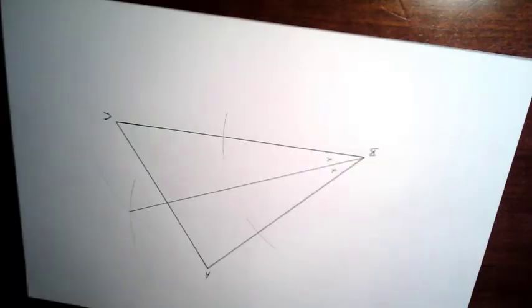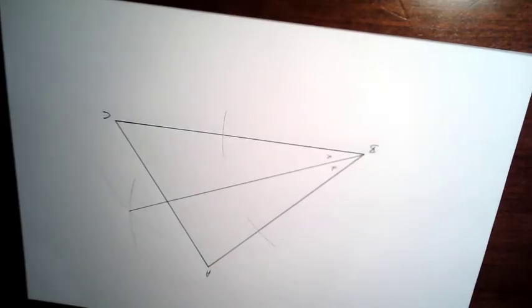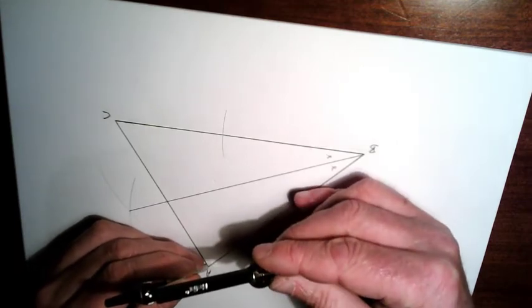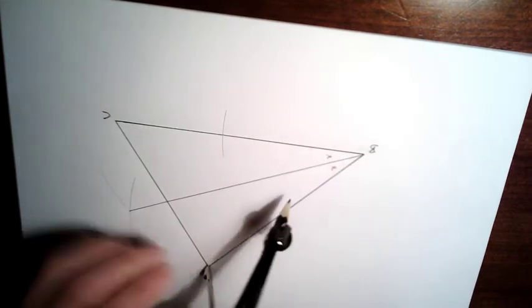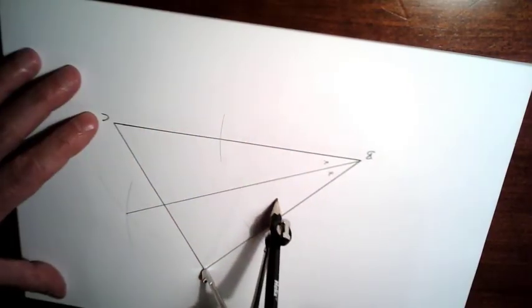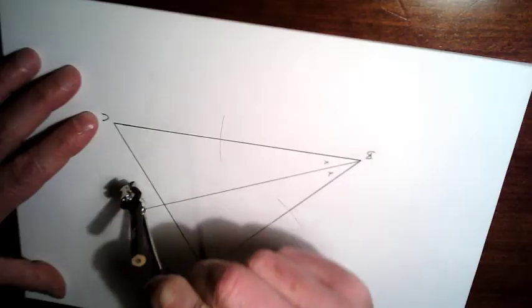This time I'm going to bisect this angle here at A. So again, get your compass, put it at A, and draw an arc here and here.